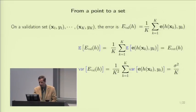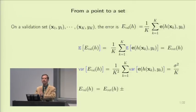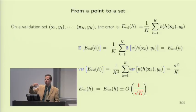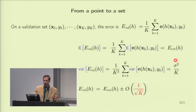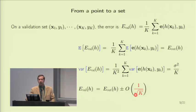We can write E-val as a random variable approximately equal to E-out plus or minus something that averages to zero and is of order 1/√K: if the variance is 1/K, the standard deviation is 1/√K. This tells us what we are estimating and the error we are committing, and how the error behaves as we increase K.